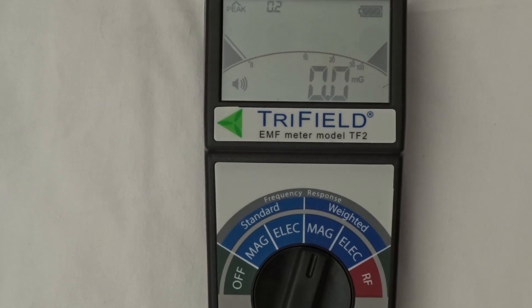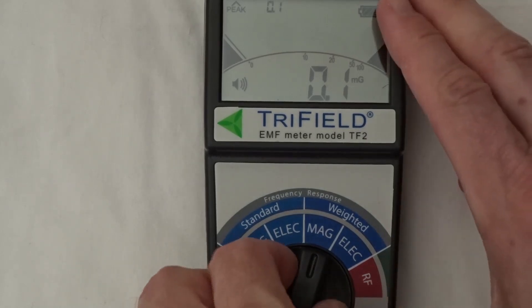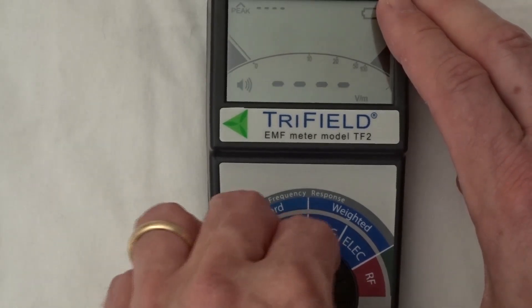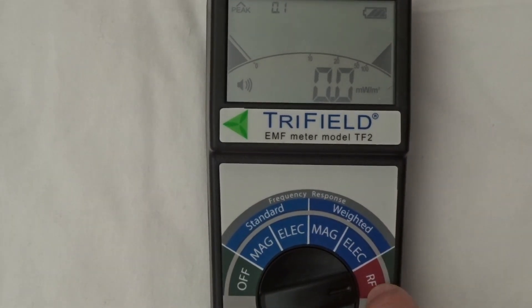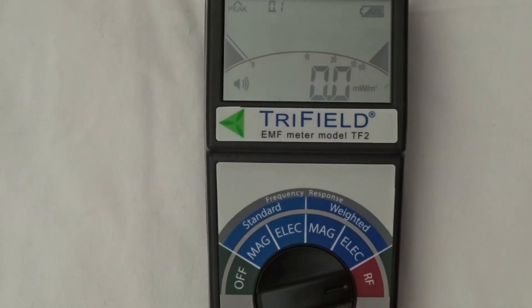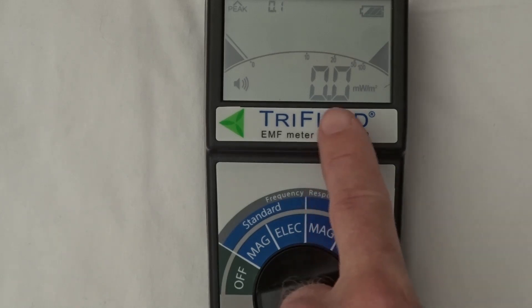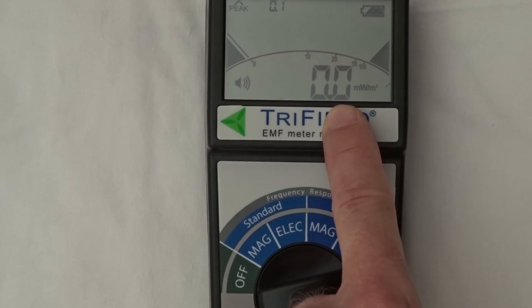That might sound a little bit confusing, but there's more complete information on my website about this. And then if we move the selector switch to the far right, where it says RF, then we are now measuring radio frequency microwave radiation. And the big digits at the bottom, which is currently a zero, that's giving us a reading in MWM squared, which means milliwatts per square meter.